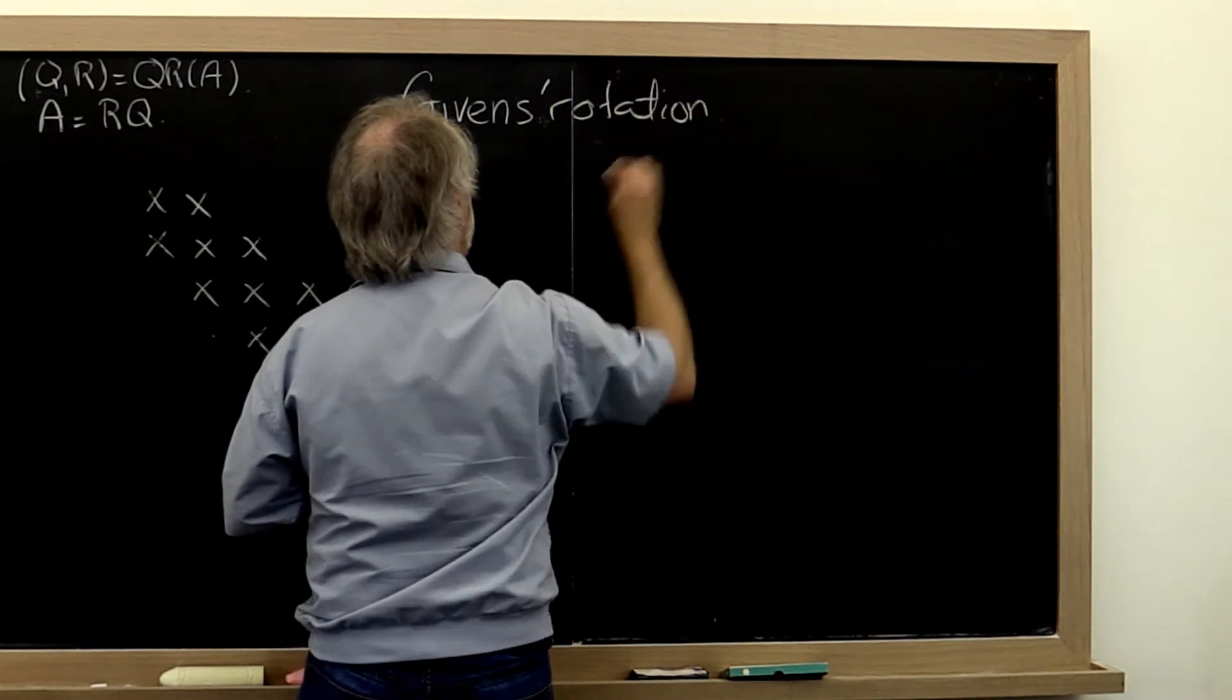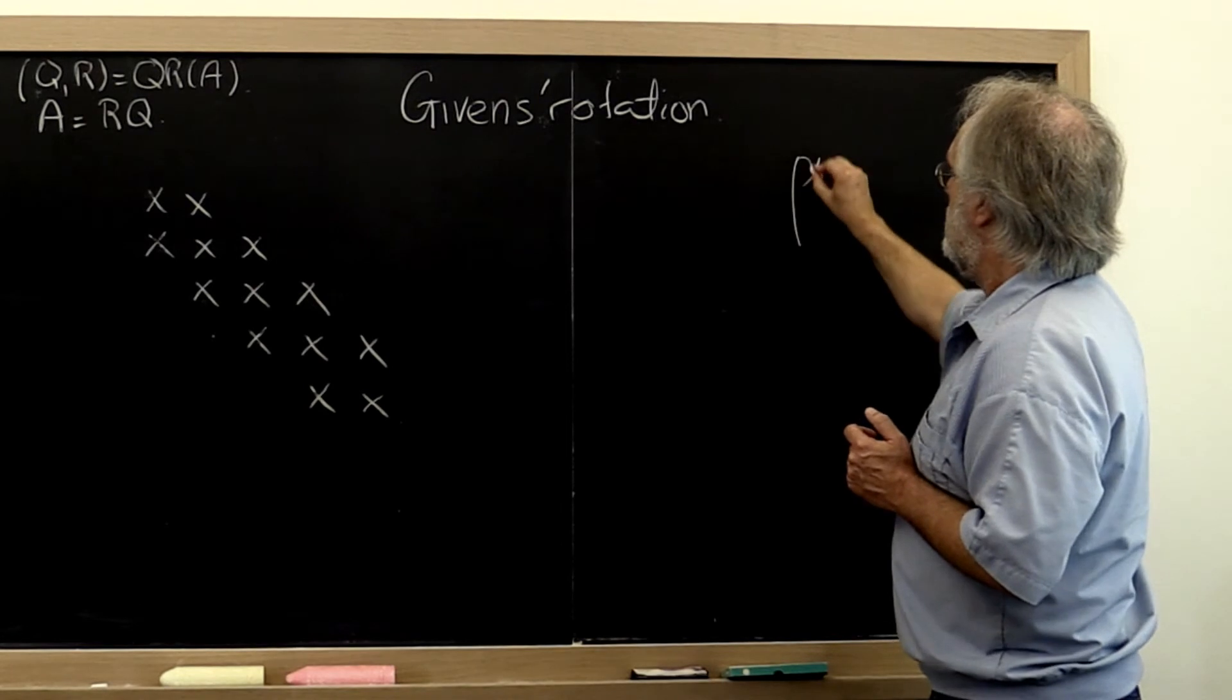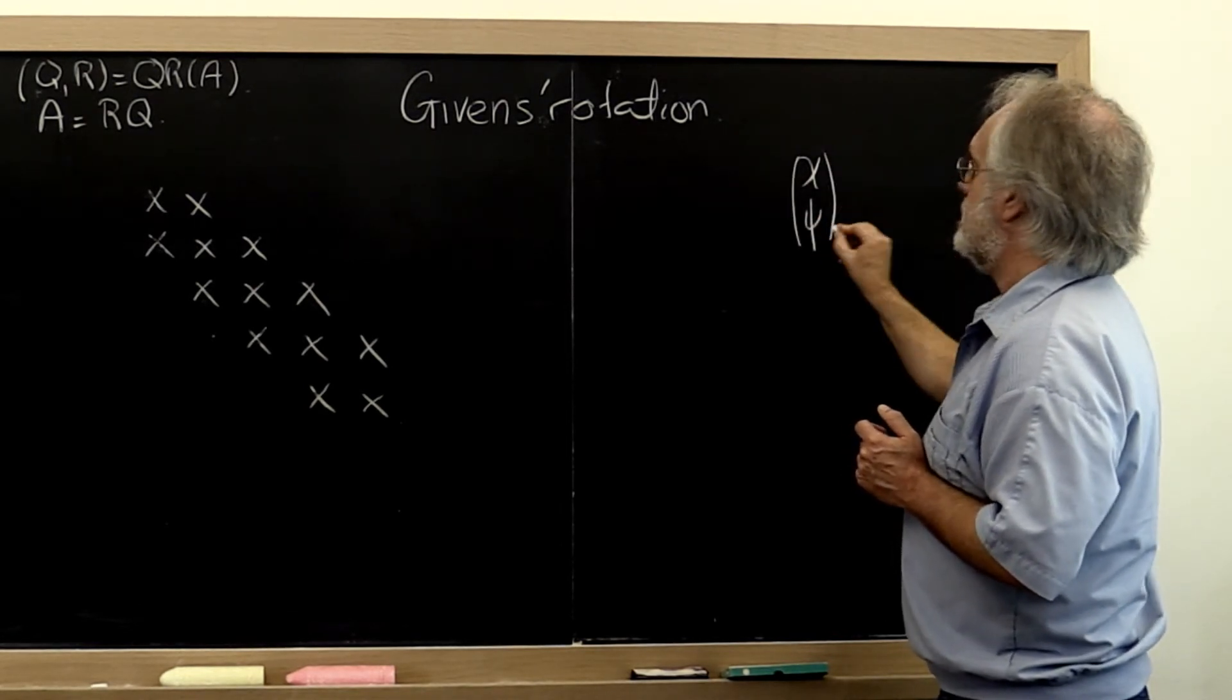What is a Givens rotation? If you have a vector with two entries, let's call it chi and psi,